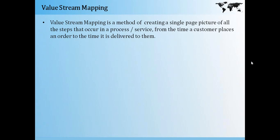What is value stream mapping? Value stream mapping, as per the definition, is a method of creating a single page picture of all the steps that occur in a process or service — from the time a customer places an order to the time it is delivered to them.